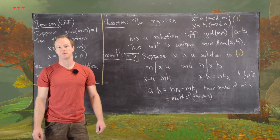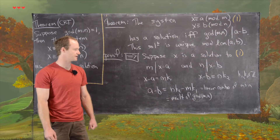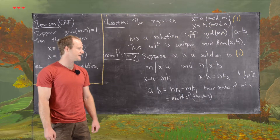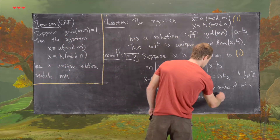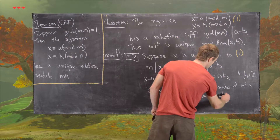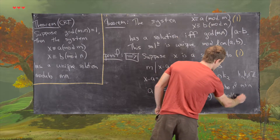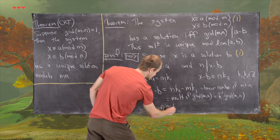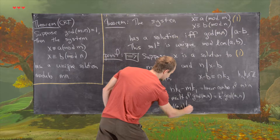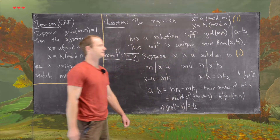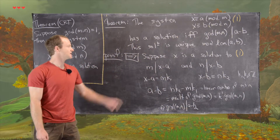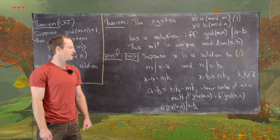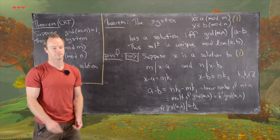There's a proof on the channel where we prove that — it's not so hard to prove. So A minus B is a multiple of the GCD of M and N, which means we can write A minus B equals K′ times GCD(M, N), which tells us that the GCD of M and N does divide A minus B. That completes this direction of the proof. Now we'll look at the other direction, and then we'll prove the uniqueness statement.